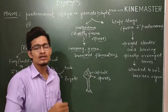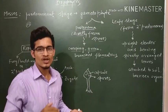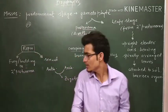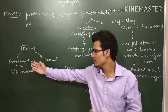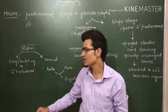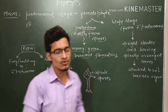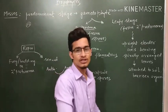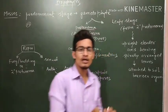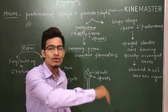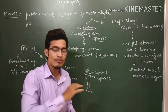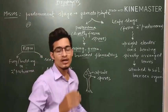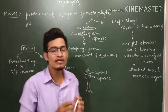Now this protonema also has different kinds of units and it can show asexual reproduction. You will see fragmentation and budding, which also take place in the secondary protonema. The secondary protonema is a further developed stage of protonema. By asexual reproduction it will form the second stage. So the first stage is protonema, and the second stage is going to be the leafy stage.